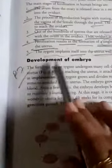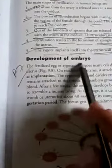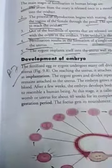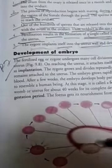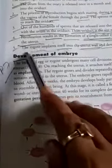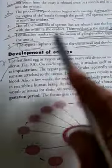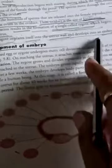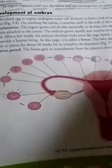Hello class, this is part 7 chapter 9: development of the embryo. As we saw in the previous part, fertilization takes place and the single-cell structure zygote is formed. It attaches itself to the uterus wall and develops into the embryo. How the development of the embryo is done, we will see in this part.